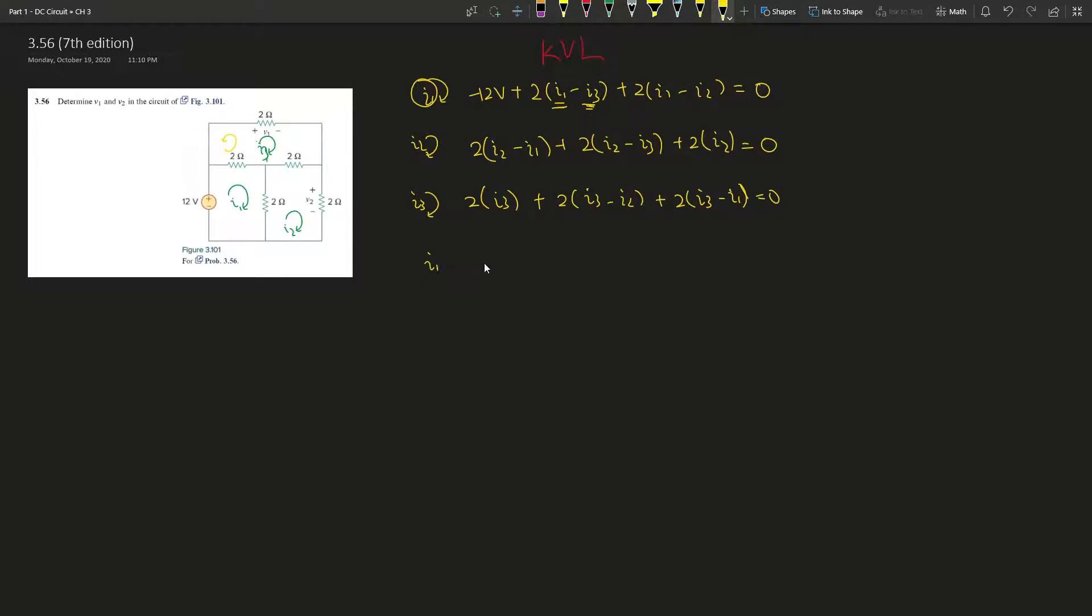Let's see, i1. All right, so 2, 2, so that's 4i1, and then negative 2i2, negative 2i3 equals 12.